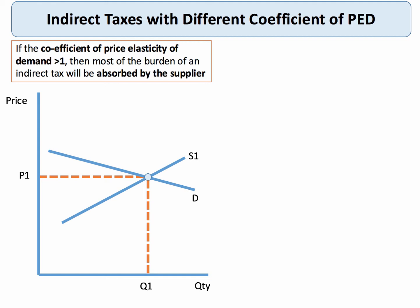We're going to take two examples of an indirect tax — one where demand is relatively elastic (price sensitive) and one where demand is relatively inelastic. Here's our initial equilibrium between supply and demand. We introduce the tax on producers, so the supply curve shifts upwards. The amount of the tax is shown by the vertical distance between the supply curves. As a result, the equilibrium price rises from P1 to P2 and the quantity falls from Q1 to Q2.